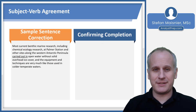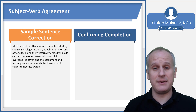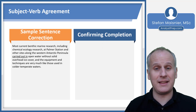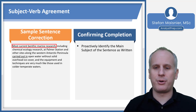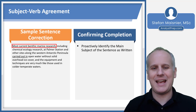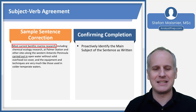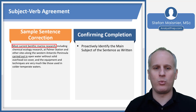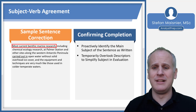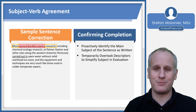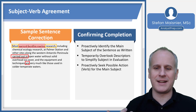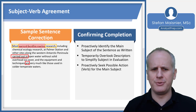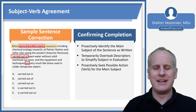The other way subject-verb agreement has issues is in terms of sentence completion. Smaller underlines can in many cases be harder to adjudicate because there's less opportunity to find different errors. We proactively identify the main subject: 'Most current benthic marine research, including chemical ecology research at Palmer Station and other sites along the Western Antarctic Peninsula, carried out in open water without solid overhead ice cover, and the equipment and techniques are very much like those used in colder temperate waters.' The main subject is most current benthic marine research. We simplify that to 'most research' and go find possible verbs — we've got 'carried out' and 'are.' We need to consider answer choices: 'carried out' versus 'is carried out.'